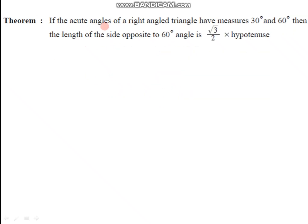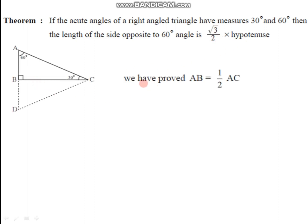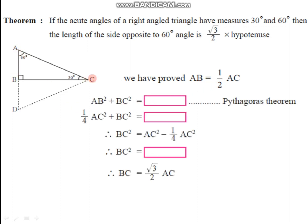Now for the second part of this theorem, the statement is: if the acute angles of a right-angled triangle have measures 30 degrees and 60 degrees, then the length of the side opposite to 60 degrees is root 3 over 2 times the hypotenuse. Consider the same diagram. We have already proved that AB equals one-half of AC. Now considering triangle ABC as a right-angled triangle and applying the Pythagorean theorem, we can write AC² equals AB² plus BC².